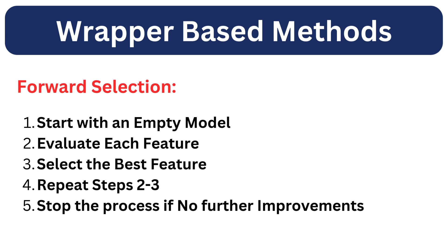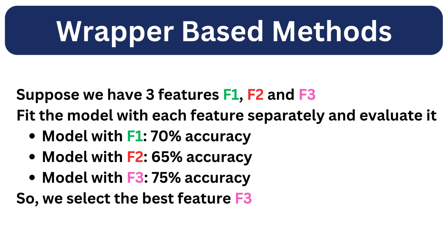The first method is forward selection. In forward selection, we start with an empty model and then evaluate the model with each feature separately. Suppose we have three features F1, F2, and F3. The model trained with F1 yields 70% accuracy, with F2 gives 65% accuracy, and with F3 gives 75% accuracy. So feature F3 has the best value and we select it for the next step.